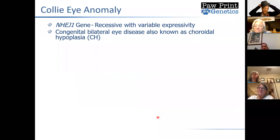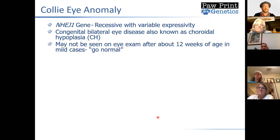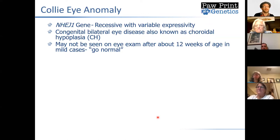The first disease on our list at Pawprint is collie eye anomaly, a disorder that's been discovered in Boykins. It also goes by the name choroidal hypoplasia. It's essentially a disorder of a particular part of the eye known as the choroid — a vascular layer of the eye near the retina that plays a role in the distribution of nutrients and blood oxygen to areas of the eye. Dogs with collie eye anomaly have an underdeveloped choroid and can have some issues.